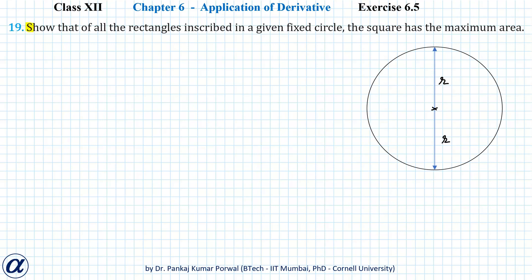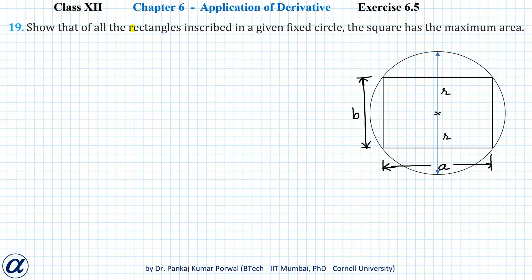In this question, we are asked to show that of all the rectangles inscribed in a given fixed circle, the square has the maximum area. We are given a fixed circle, meaning the radius is fixed or constant, and we are inscribing a rectangle in this circle. Let's say the rectangle has sides A and B, and we want to show that the rectangle will have maximum area only when it is a square, that is, A equals B.